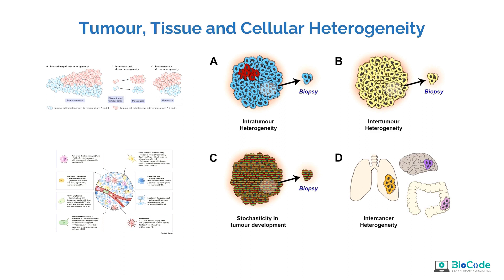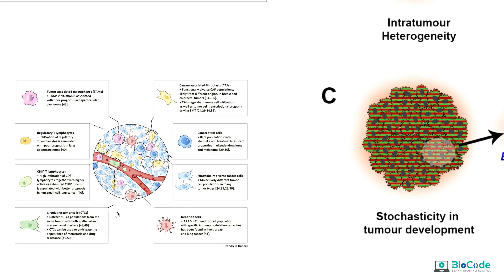Each tissue has multiple different cells at any given moment, whether an organism is in a normal or disease state. Those cells present in a particular tissue perform different functions based on their gene expression profile and act differently based on that profile. For example, at any given moment a single tissue can have multiple different cells such as immune cells, tumor-associated macrophages, CD4 T cells, and B cells.